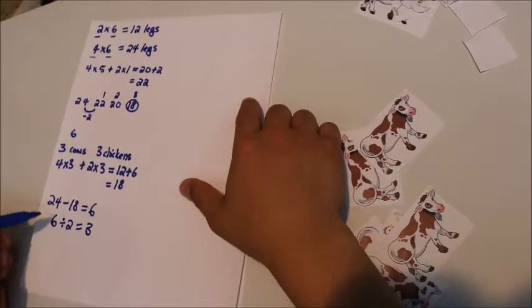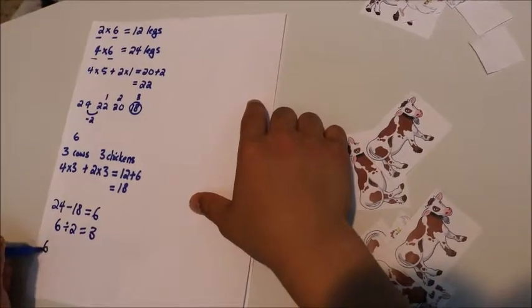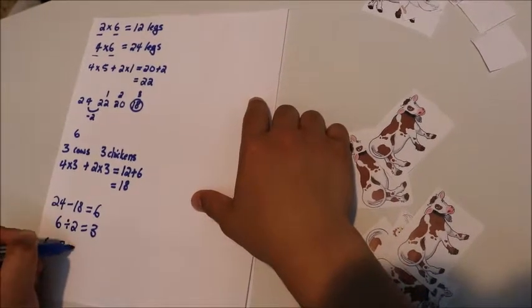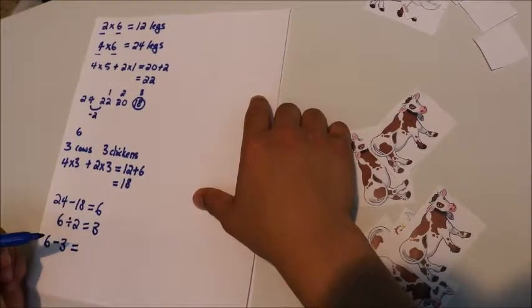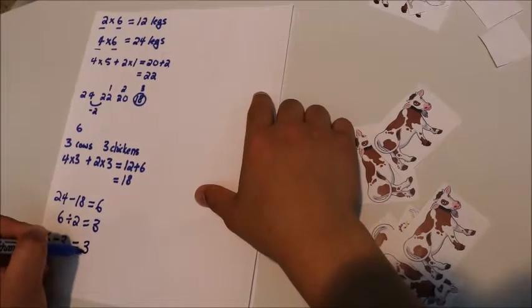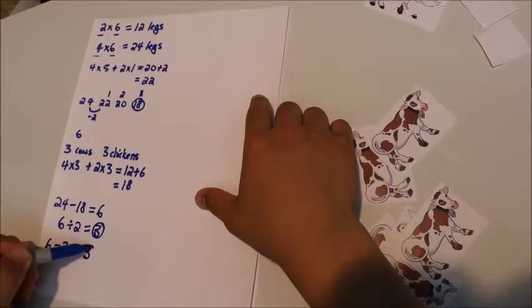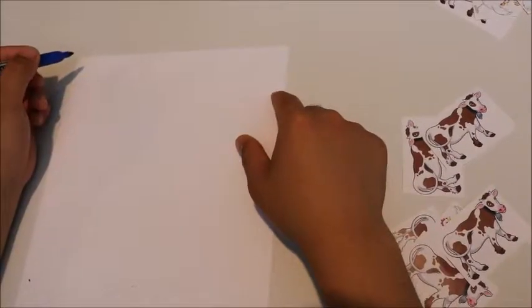So if we start off with 6 cows with 24 legs, then 6 minus 3 is equal to the number of cows left or 3. So now we know that there are 3 chickens and 3 cows. The next day, Old MacDonald sent his 2 sons to tell him how many ducks and how many horses he had.